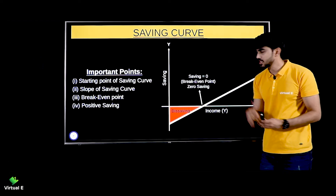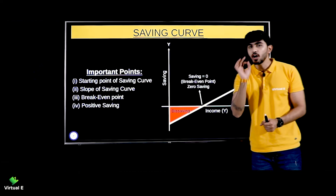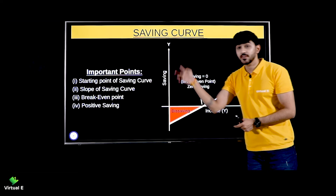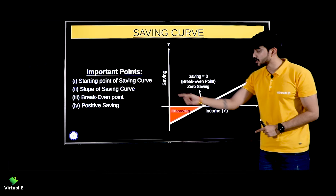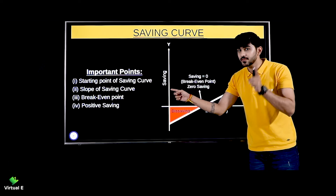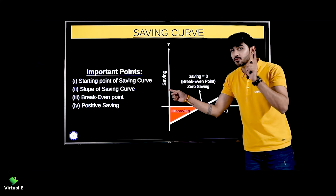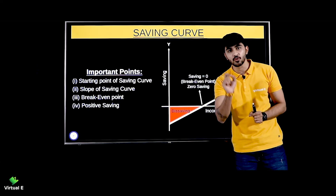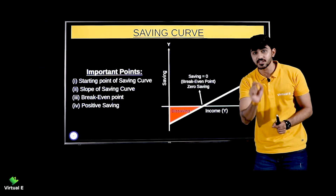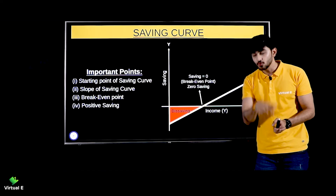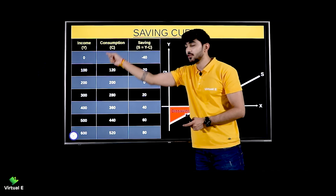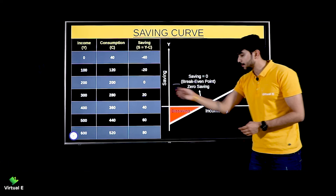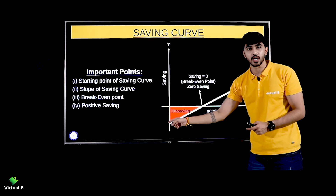Now let's come to the important points when we make saving curves. First: the starting point of the saving curve. The consumption curve will always start from a positive value. And because the consumption curve's starting point is always positive, the savings curve will always start from negative. Why? Because income is zero and consumption is 40, so savings will be minus 40 — so your start will always be negative.